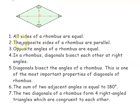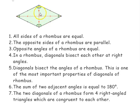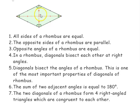Properties of rhombus: All sides are equal in length. Opposite sides are parallel. Opposite angles are equal in measure. The diagonals bisect each other at right angles, forming a 90-degree angle. Diagonals bisect the angles of the rhombus. The sum of two adjacent angles equals 180 degrees. The two diagonals form four right-angled triangles which are congruent to each other.